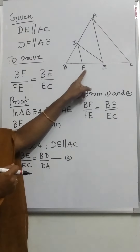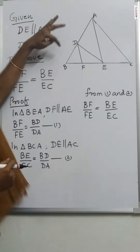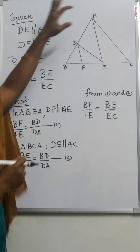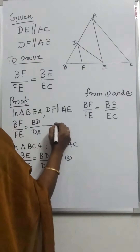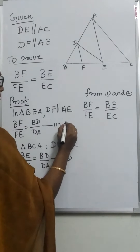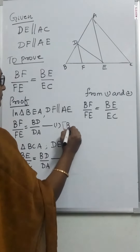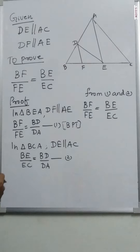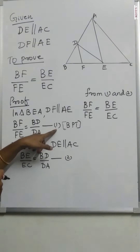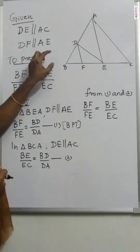BF by FE is equal to BD by DA by the Basic Proportionality Theorem. Take this as equation number 1. Second step: